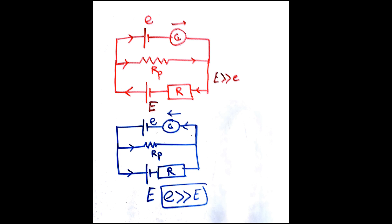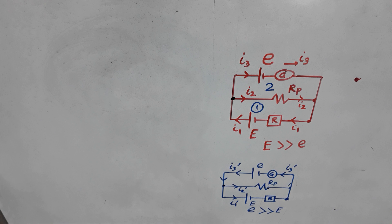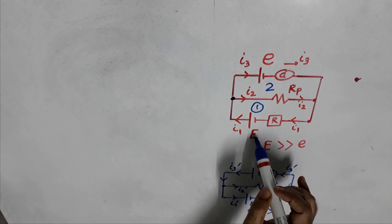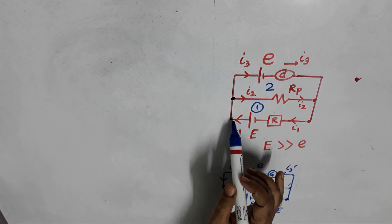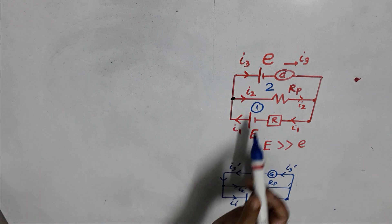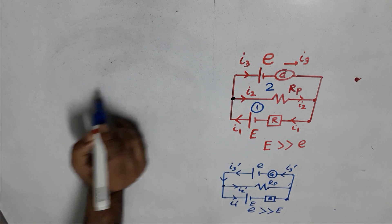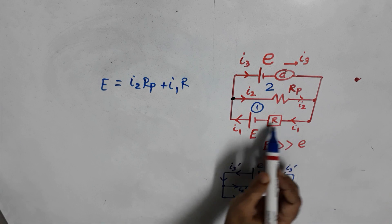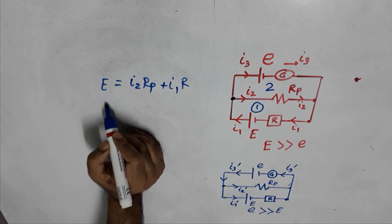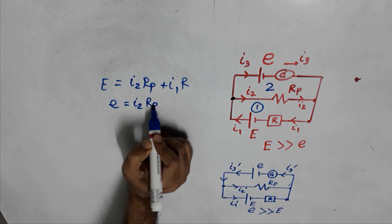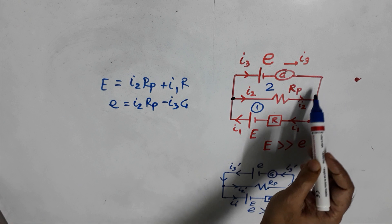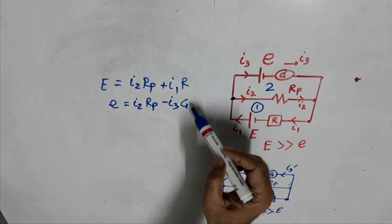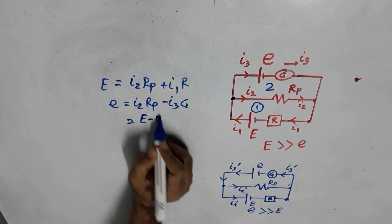Before going to the details of the potentiometer, let us first discuss the basic principle behind it. Consider a circuit in which the EMF of the battery (capital E) is very much greater than the small e, so current i1 flows, branching as i2 and i3. For loop one: E = i2·Rp + i1·R. For loop two: E = i2·Rp − i3·G, where G is the resistance of the galvanometer.